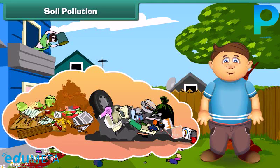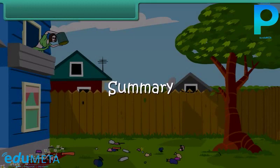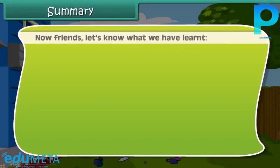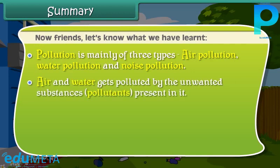To reduce soil pollution, we should stop littering. Now let's summarize what we have learnt. Pollution is mainly of three types: air pollution, water pollution, and noise pollution. Air and water get polluted by the unwanted substances — pollutants — present in them.